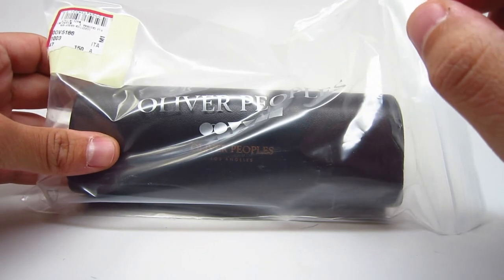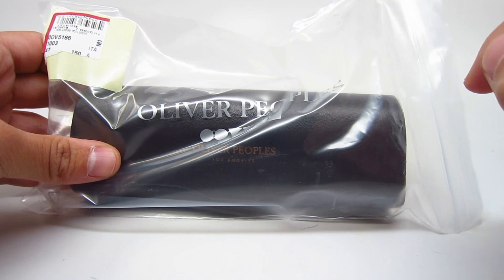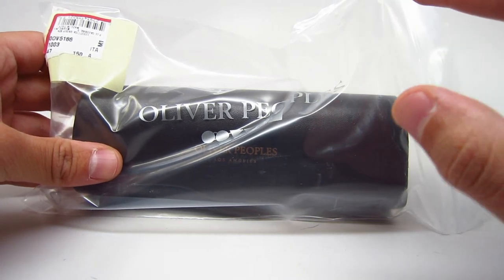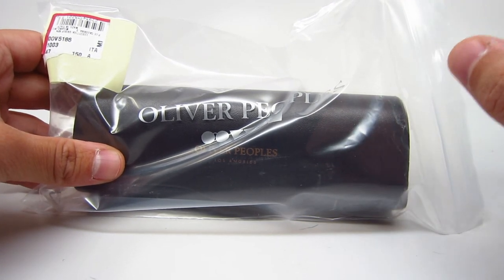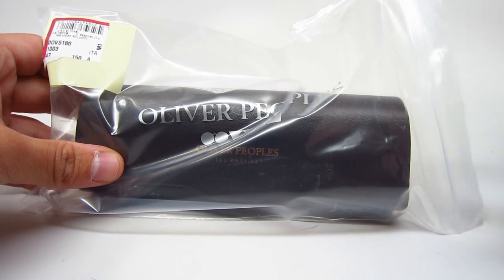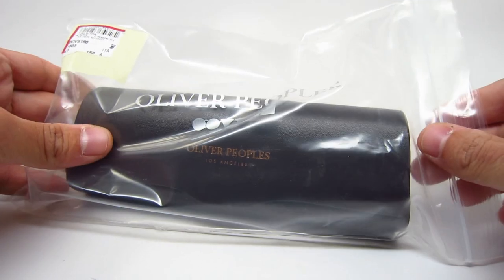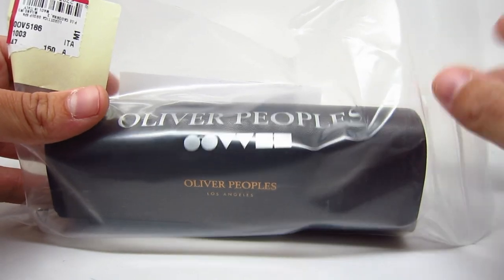So with the packaging, a lot of times it'll just come with the bag. But Oliver Peoples is so inconsistent with their packaging. Like maybe one third of the time it'll come with a box. Most of the time it just comes in the Oliver Peoples plastic bag here.